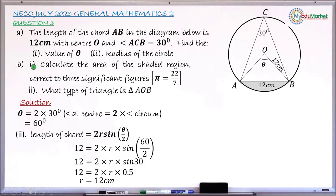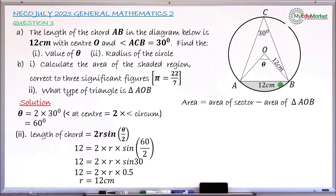Moving to question B: calculate the area of the shaded segment. The formula is: area of segment = area of sector AOB minus area of triangle AOB. The area of a sector is given by (θ/360) × πR², and the area of the triangle is (1/2) × R² × sin θ.